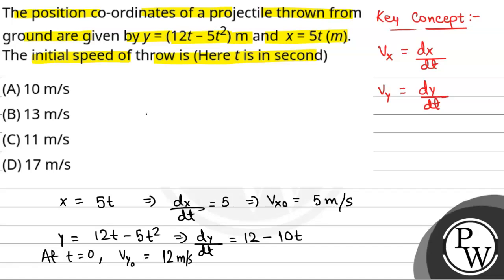So our initial v naught will be root over v_x naught squared plus v_y naught squared. That will be √(5² + 12²) which equals 13 meters per second. So the initial velocity will be 13 meters per second. Hope you all understand, best of luck.